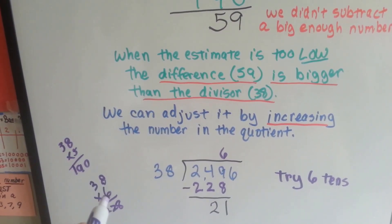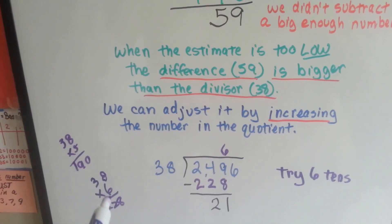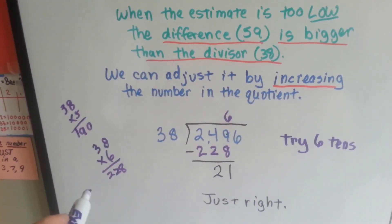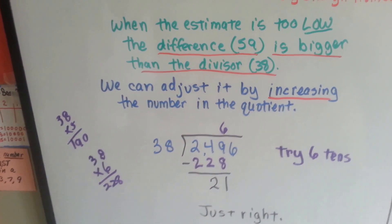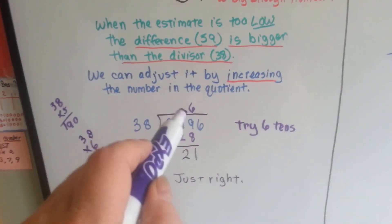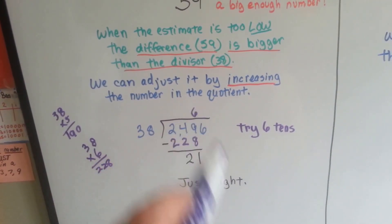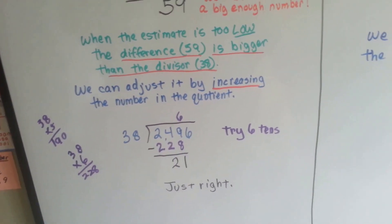I would just go up by 1, and if that was too small, I'd try 38 times 7 on the side. That's how I do it. Some people just do it up here and they just erase up here. I prefer to do it off on the side so I don't mess up my problem.